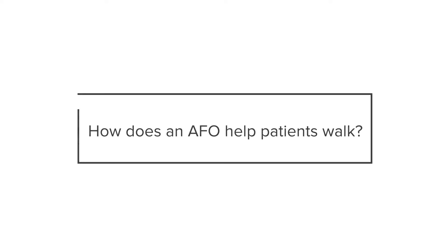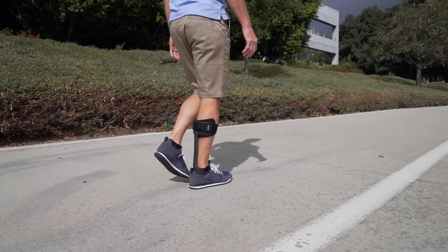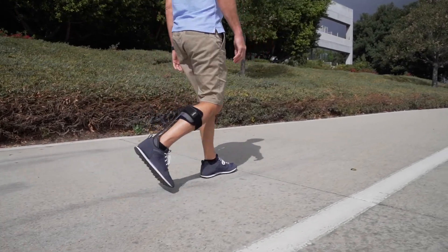The Aspen M2 AFO is a very lightweight and flexible — just stiff enough to pick up the foot during gait — so the patient very fluidly is able to swing their foot through the air, land on the ground, and walk over the AFO very smoothly.